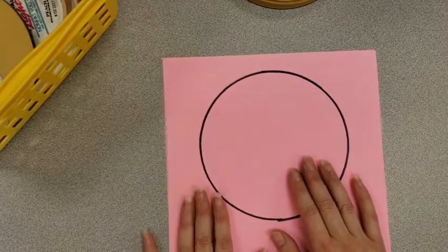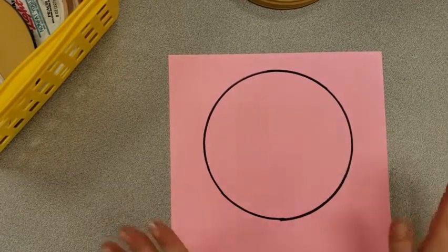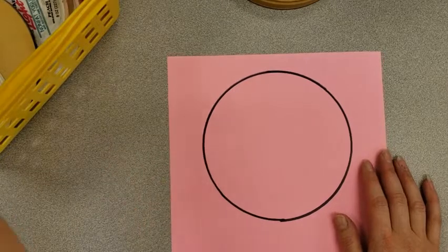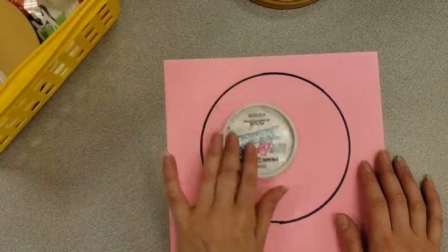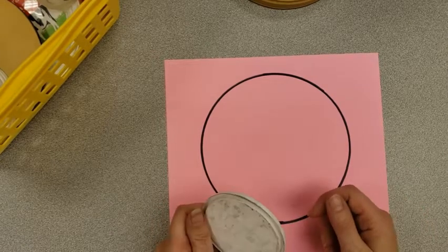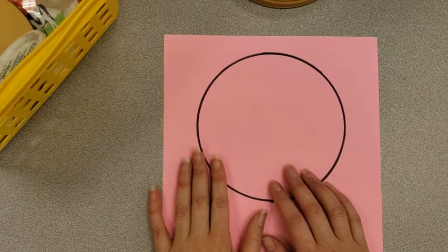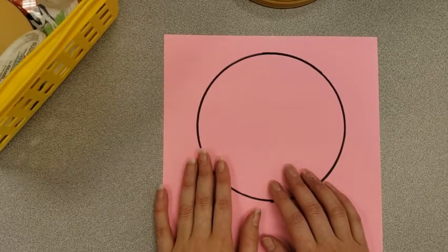Once you have the circle the way you like it now you are going to decorate it however you want. You can take even more circles and you can trace them inside. You could draw something in it, make stripes or lines or a pattern or whatever you want. This is your dot and you are going to get so creative with it and I can't wait to see what you make.